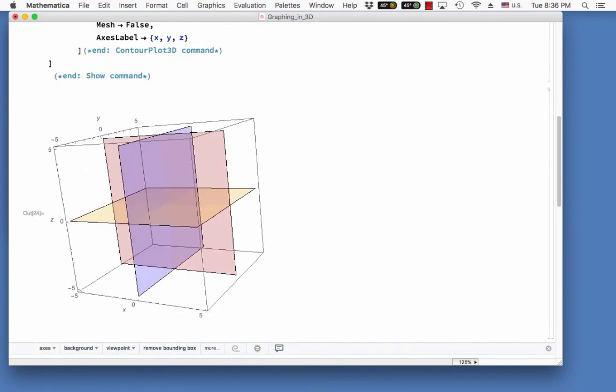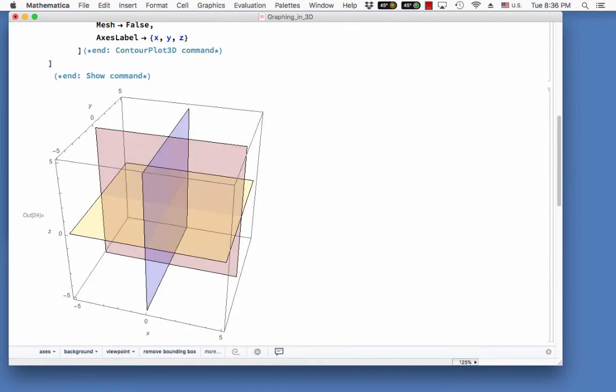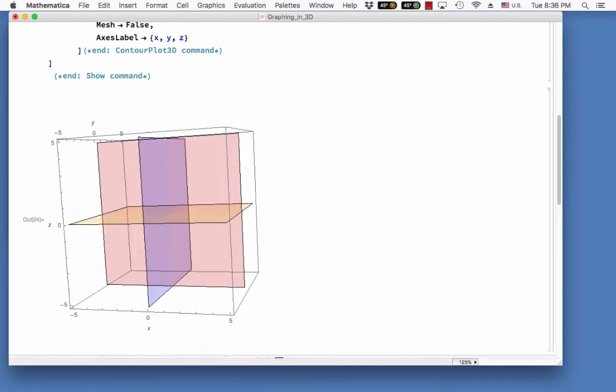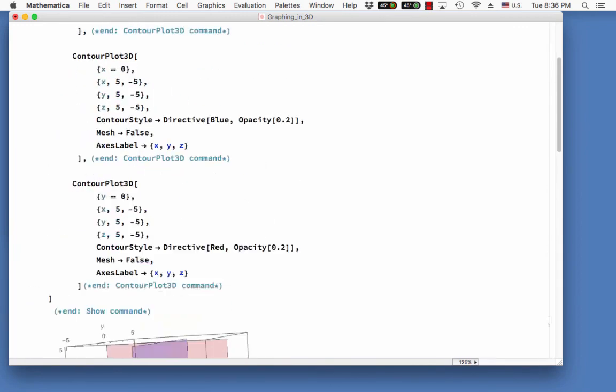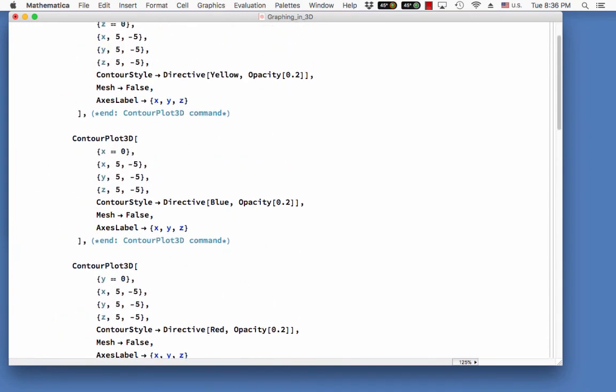Look at that. All three axes together. XY, excuse me, all three planes. XY plane, YZ plane, XZ plane. And you can see that we're using ContourPlot3D.